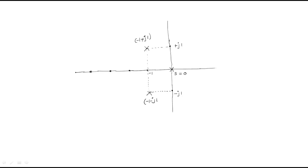The third pole is at minus 1 minus j1, which is the conjugate. The fourth pole is at minus 4 on the real axis. So we have located all four poles: s = 0, minus 1 plus j1, minus 1 minus j1, and minus 4.